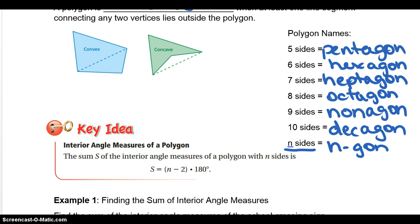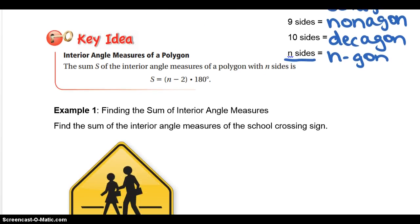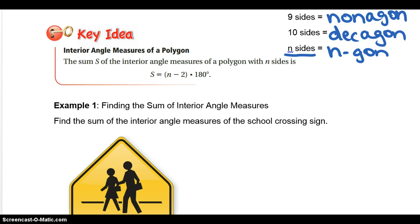Okay, so looking down here to the next key idea. The sum of the interior angle measures of a polygon with n sides is n minus 2 times 180. And from the activity we did in class today, this should be familiar. We know that a triangle has a measure of 180. So then in a quadrilateral, you can make two triangles, which is 2 times 180. So we did this in class a little bit today with the activity.